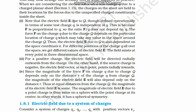Note that the electric field E is a vector quantity. Even though it is defined operationally in terms of some test charge q, E is independent of q. We are able to measure the field only in the presence of q, but it does not depend on q. This is because force F is proportional to q, so the ratio F/q does not depend on q and remains constant.